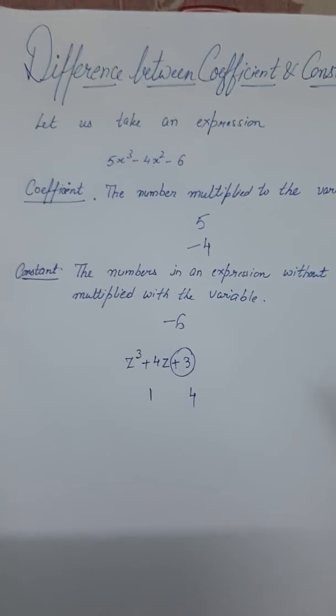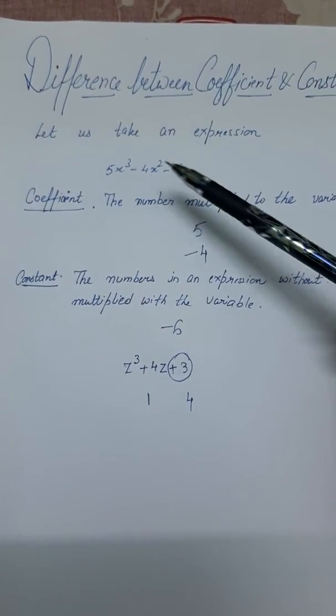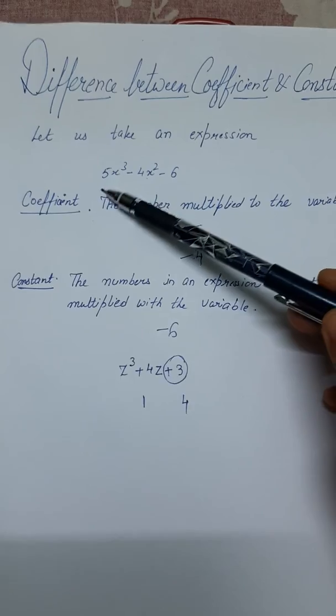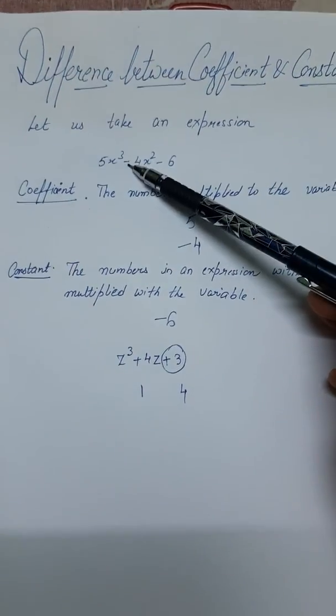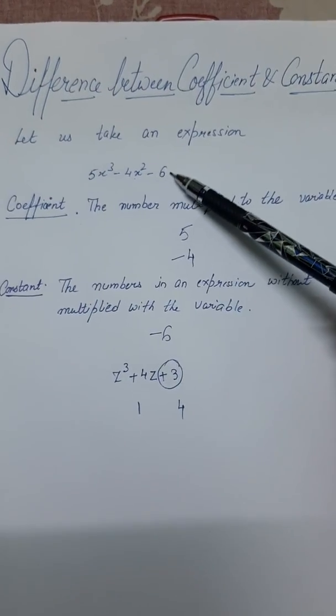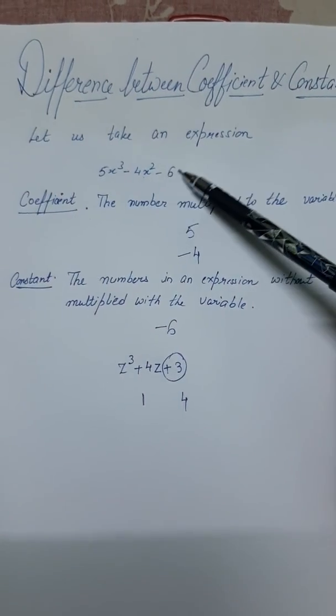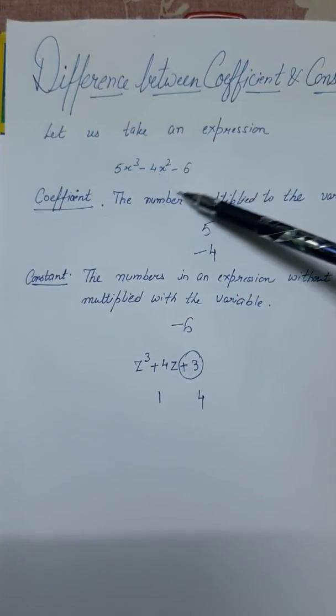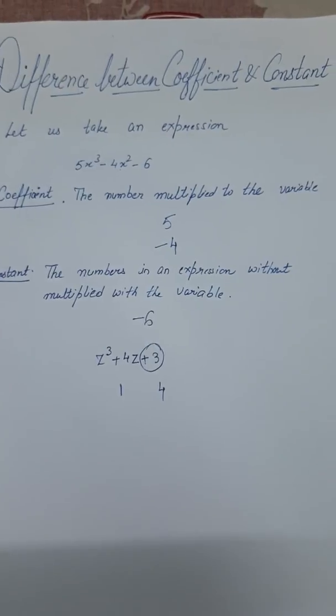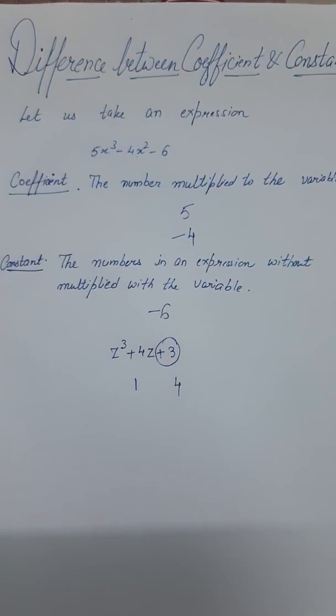So this is the main difference: the numbers multiplied to the variable in an expression are called coefficients, and the numbers which are not multiplied to the variable are called constants. Numbers that stand alone are called constants. Thank you so much. If you like my video, please hit the like button.